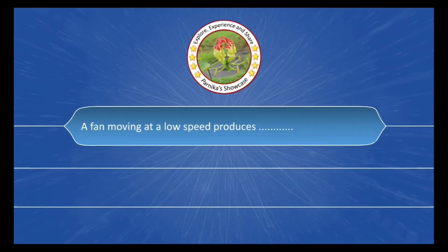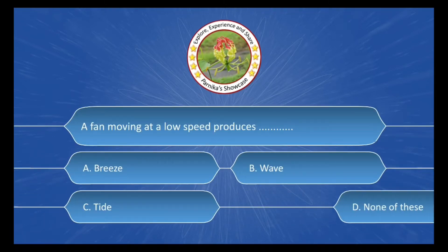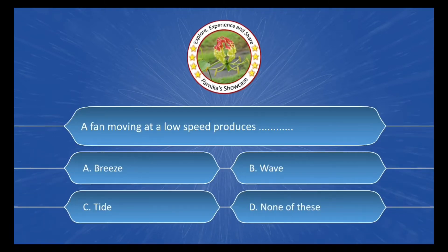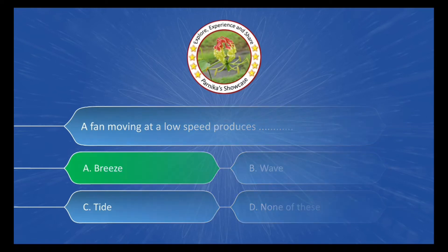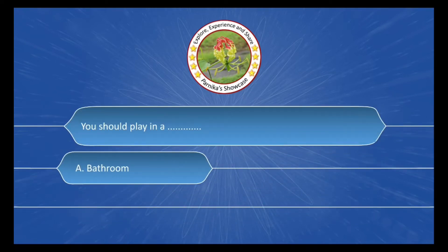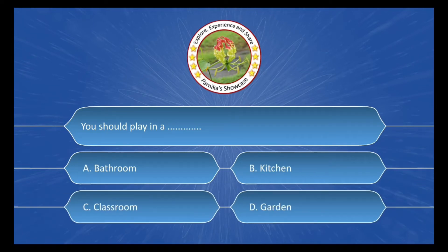Next question: A fan moving at a low speed produces dash dash. And the options are: A. Breeze, B. Wave, C. Tide, D. None of these. And the correct answer is Option A. Breeze.